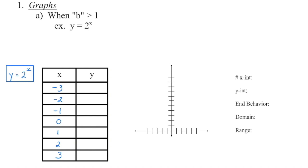In our first question, y equals 2 to the power of x is our function. We know it's an exponential function because the exponent is a variable. b is always the base of that power, so in this case I have a b value of 2. a is the number we multiply that power by, and because I don't see it, I know it's a 1 — 0 times anything is 0. So a in this case is 1, and b is 2 in our first example.